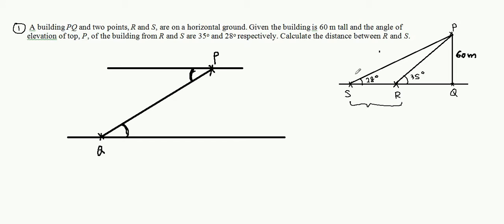So now we are actually having two right angle triangles. We can find the distance from S to Q first. We draw a triangle. So this is P, Q, this is S. And the angle here is 28 degrees. And here is 60 meter. So we want to find SQ.